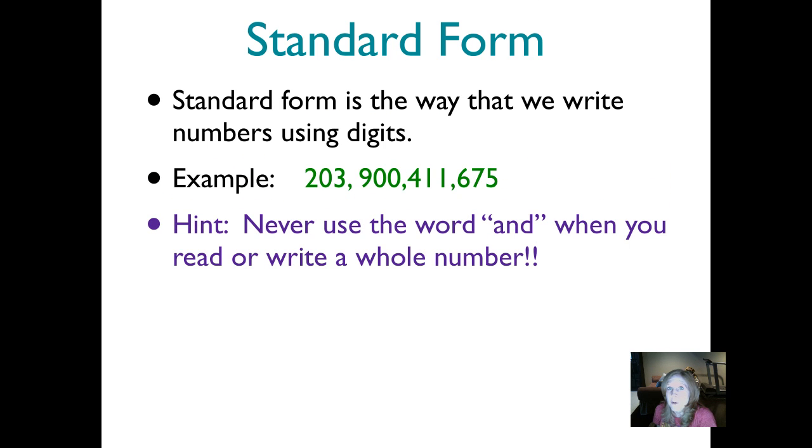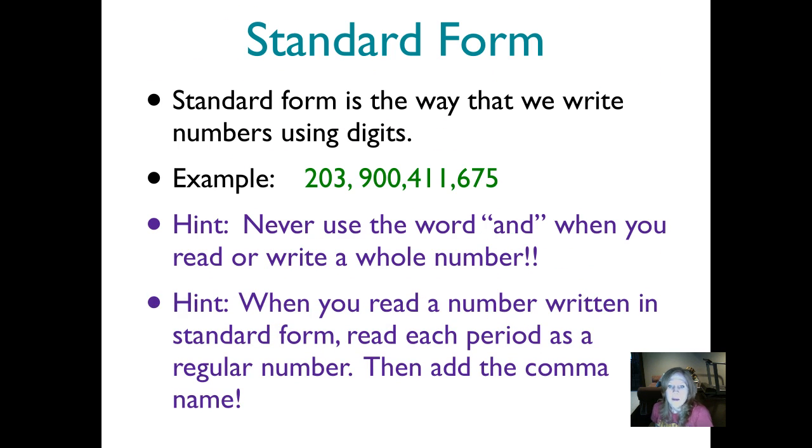Remember, never use the word and when you read or write a whole number. Practice that any time you see a number written in standard form today. And remember that when you're reading a number, you can separate it out by periods. So you read 203 and then say the comma name. 203,900,411,675. It's easier to read a number when we break it apart using the periods and the comma names.